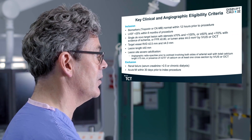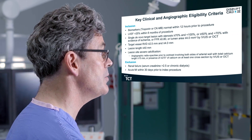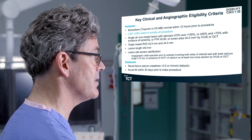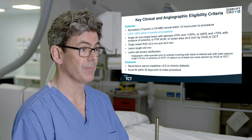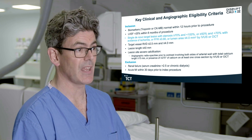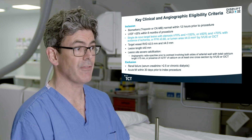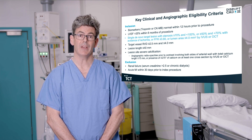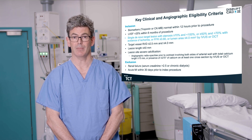The key clinical and angiographic eligibility criteria include being biomarker negative and having an ejection fraction greater than 25%. If the stenosis was at least 50% but less than 70%, there had to be objective evidence of myocardial ischemia, including an FFR less than or equal to 0.8 or a lumen area of less than or equal to 4 mm squared by intravascular imaging.